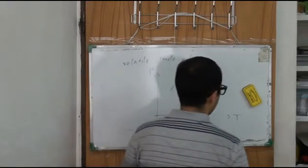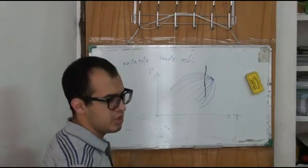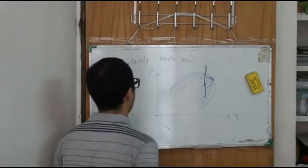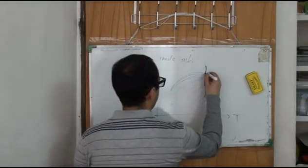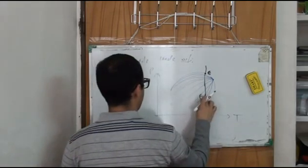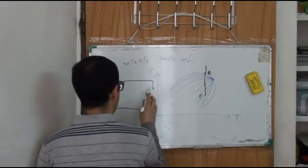So if I want to draw the liquid shrinkage curve—how the liquid shrinks in this type of crude oil—it is something like this. If we find these two points E and F, for example, it is something like this.